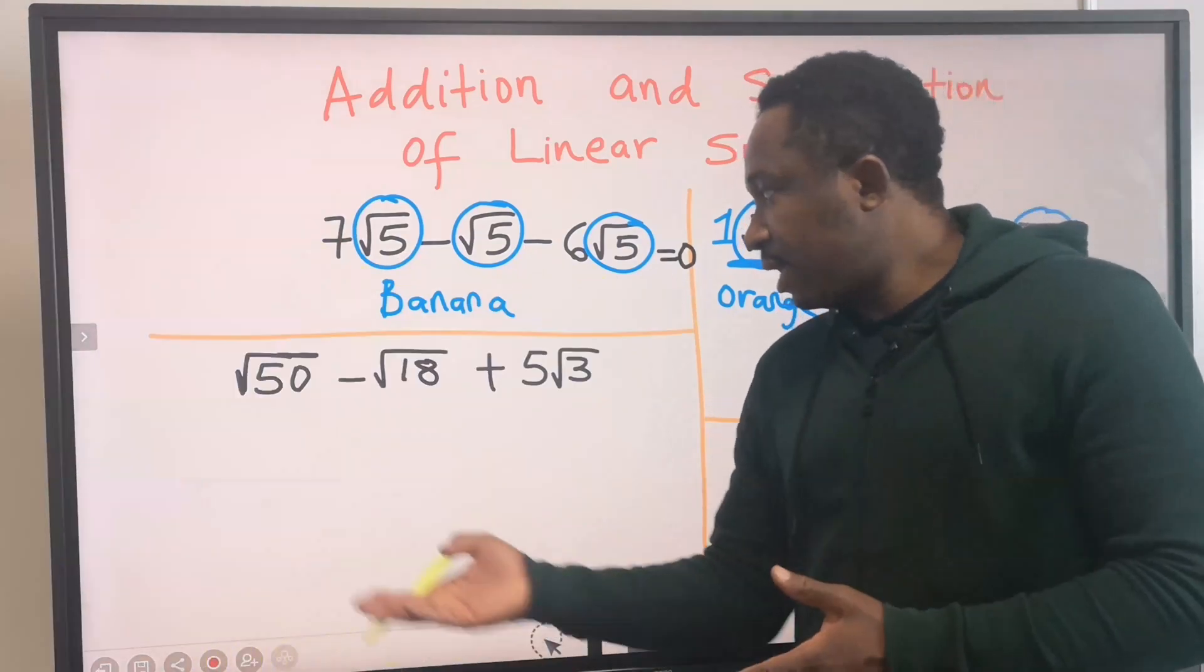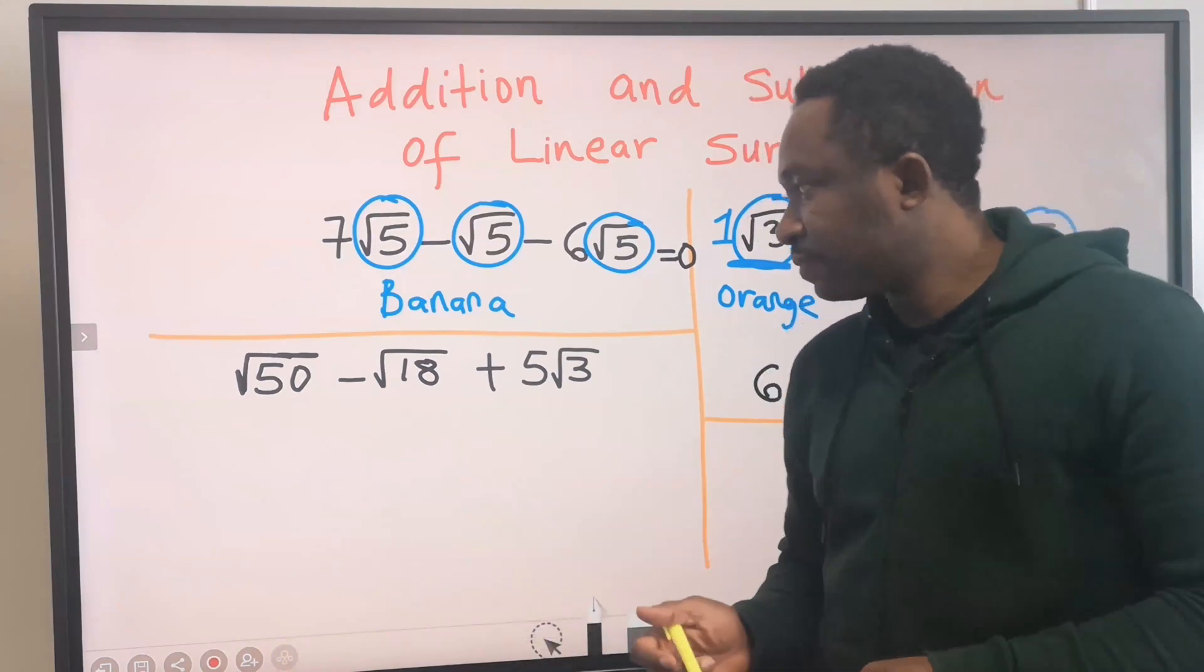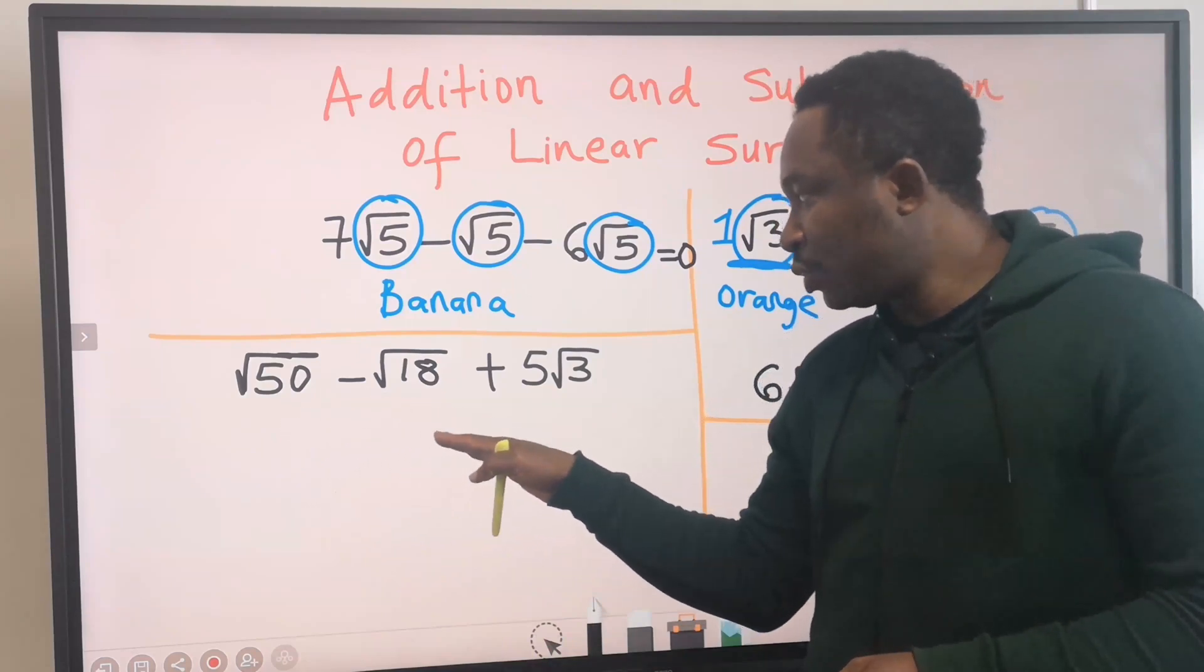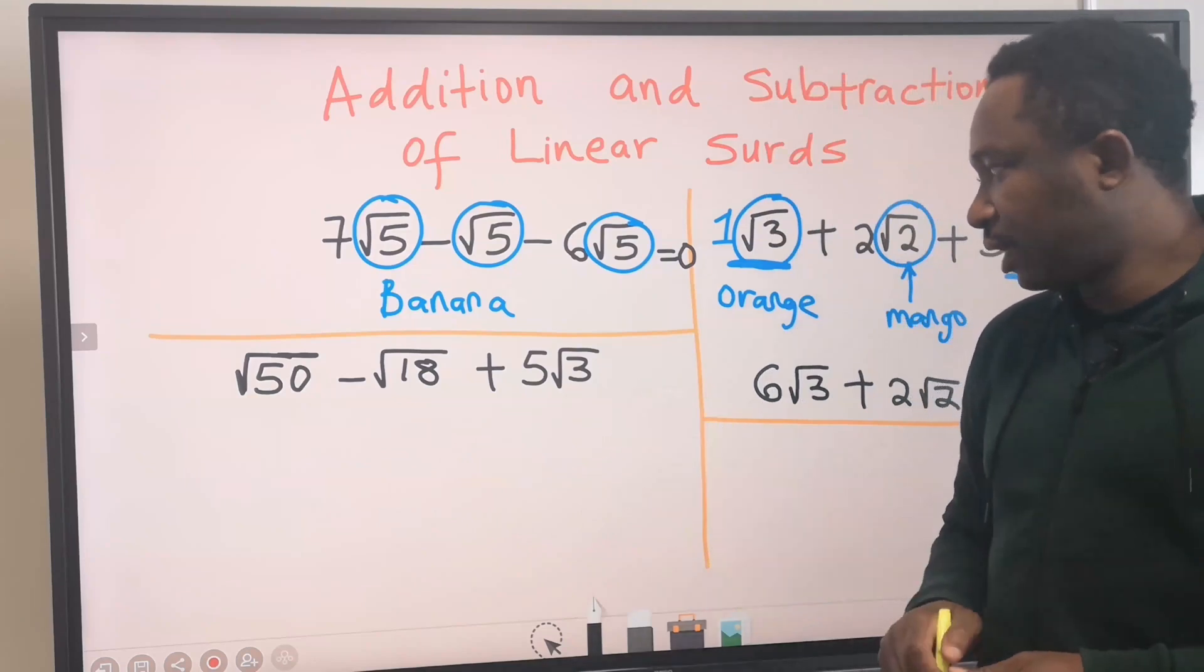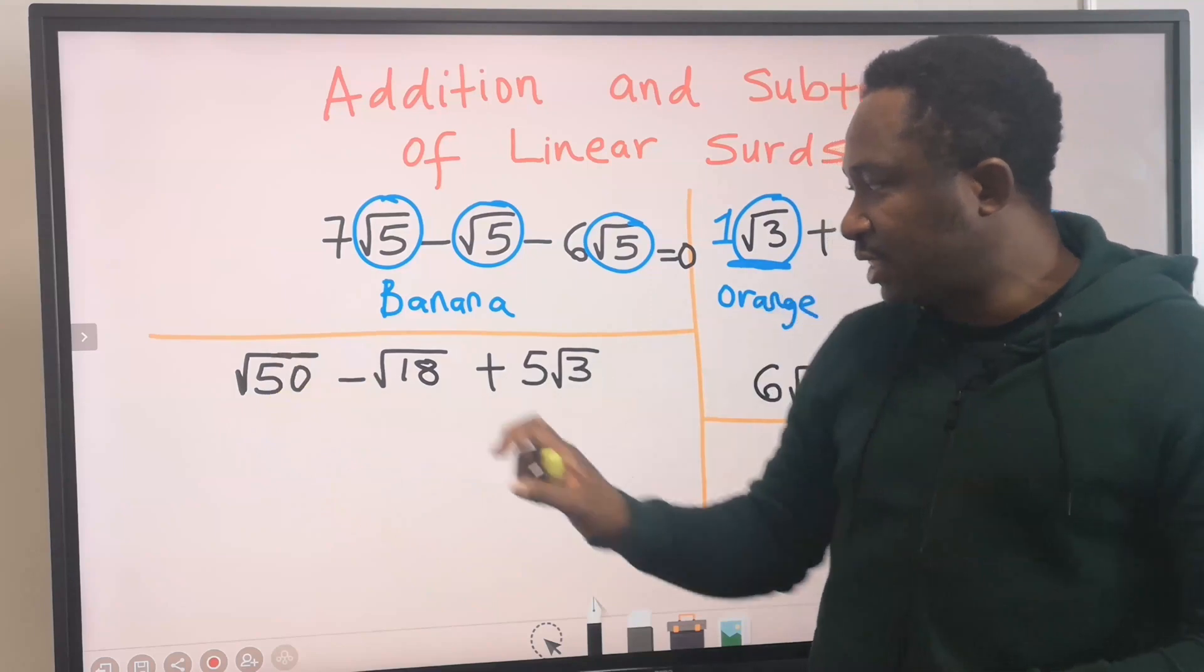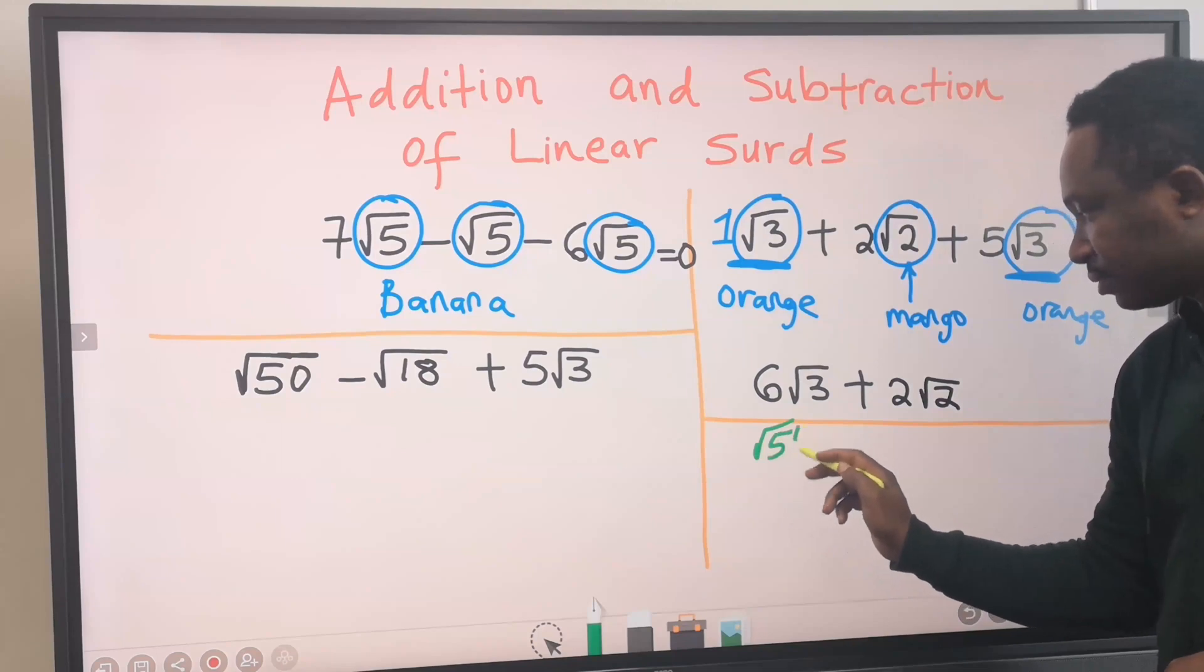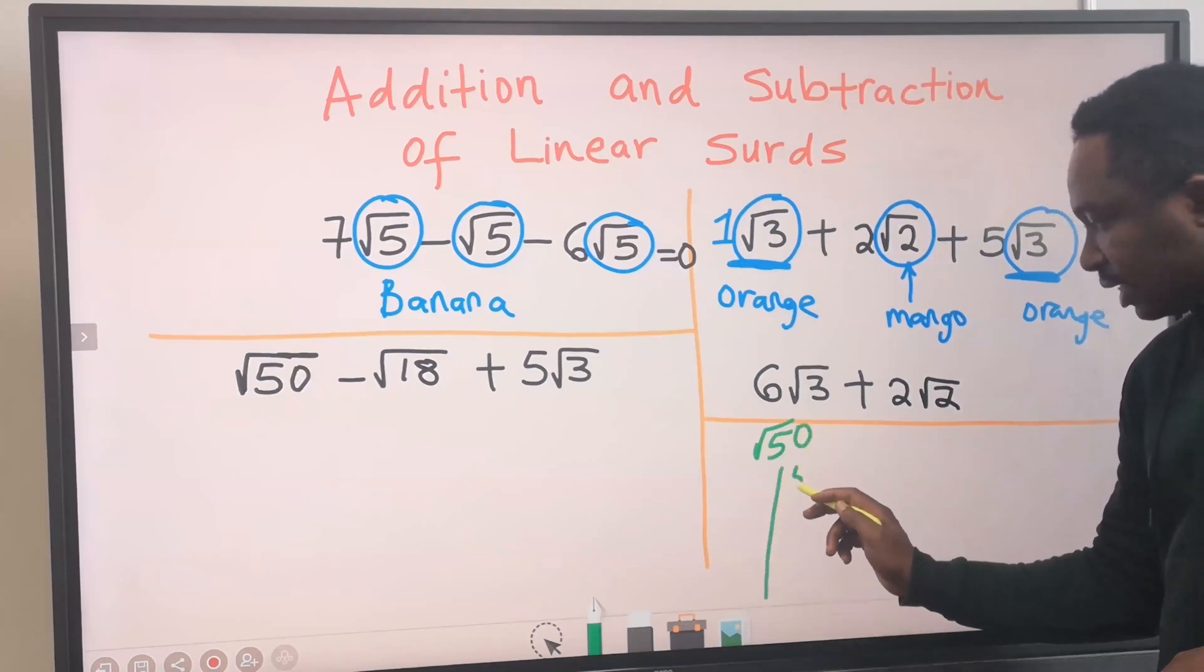Next, let's consider this question. We are going to simplify this surd. Square root of 50 minus the square root of 18 plus 5 root 3. What we are going to do here is we are going to bring out this 50. And we are going to have root 50. We are going to draw a line. This is 50. I will start with 2.